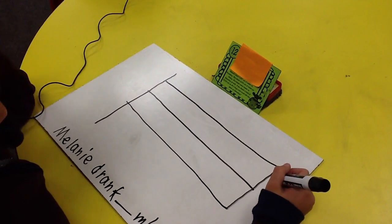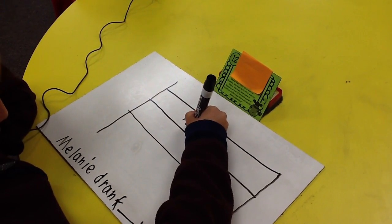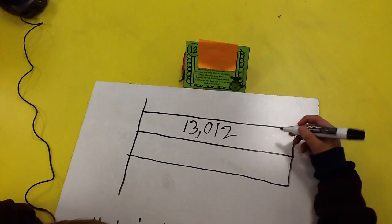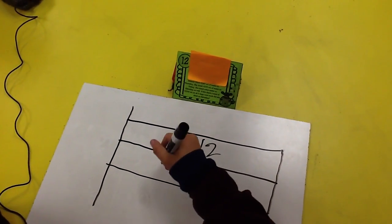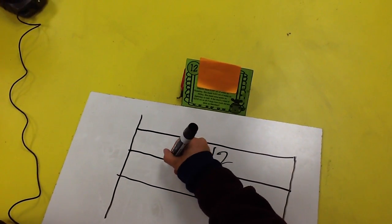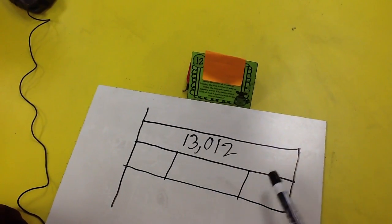And so she drank 13,012 in all three days. I need to put that in the big box because that's how much she drank in three days. And since there's three days, I need to divide it into three sections.